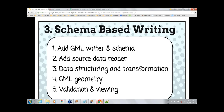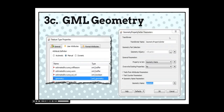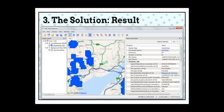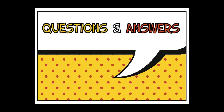Let's go back to our slides. That's how simple the workspace is now compared to what it used to be. FME deals with all that complex XML structure — in the old XML templater days, we had to worry about that. The key point is: set the geometry name. If you have multiple geometry names, FME can handle that too. Always validate and pretty print. Pretty print makes the output human-readable. What are we looking at next? Questions and answers.